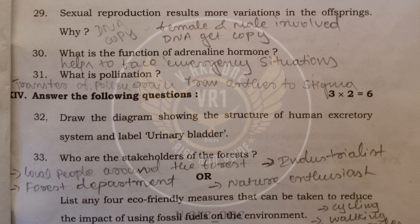29th, sexual reproduction results more variation in offspring because in sexual reproduction, it involves both male and female parent and DNA will get copied. So, during DNA replication, there is some changes in DNA. So, variations occur in the offspring.